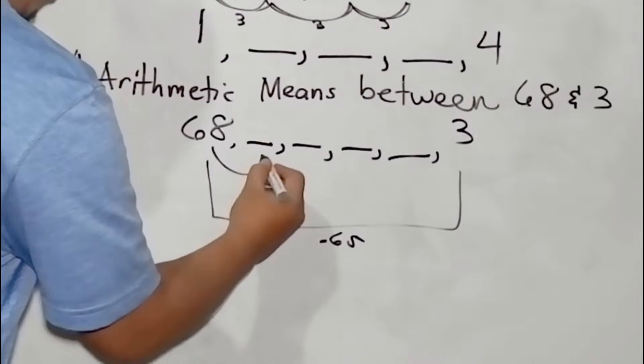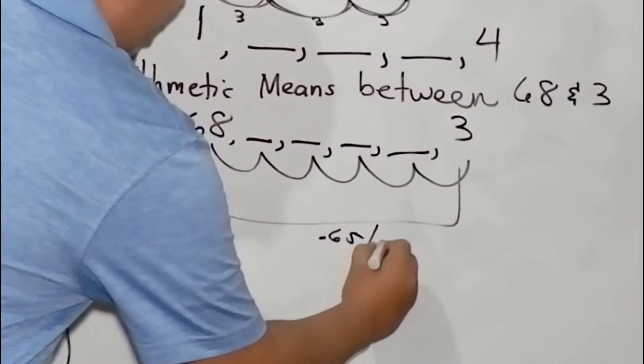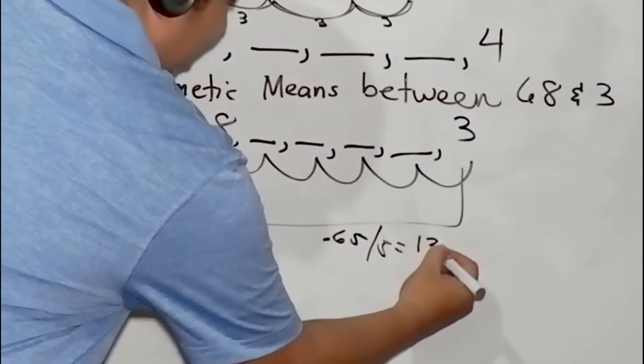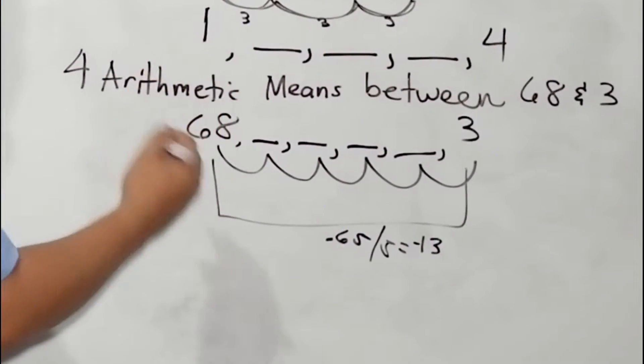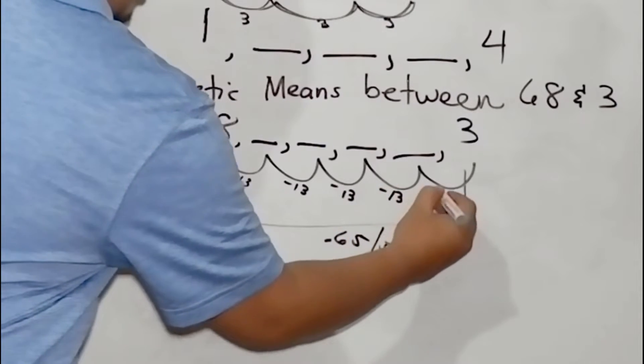Now, how many steps? 1, 2, 3, 4, 5. We have 5 steps. So we will divide this by 5, and the answer is -13. Therefore, our common difference is -13.